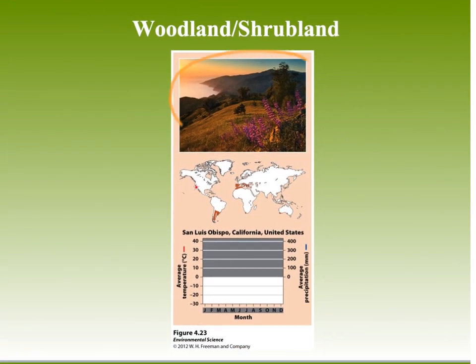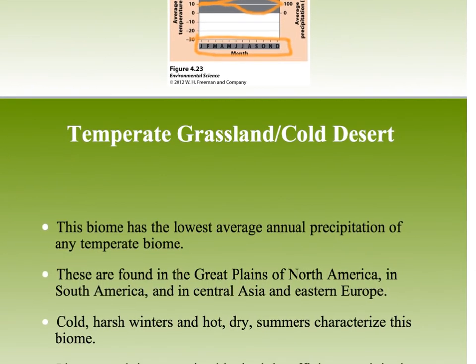Here's the graph — this is likely Montana de Oro in San Luis Obispo. The temperature is fairly consistent, and precipitation dips significantly during the year. So although it has a 12-month growing season, it is limited by precipitation. It's a very productive system with very unique organisms.